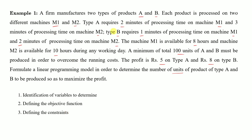Before proceeding, we first convert all the given information into a table so we can understand it in a quick and easy way. The products given are A and B, and the machines are M1 and M2.